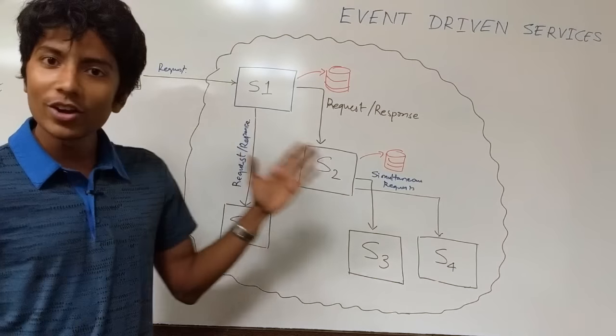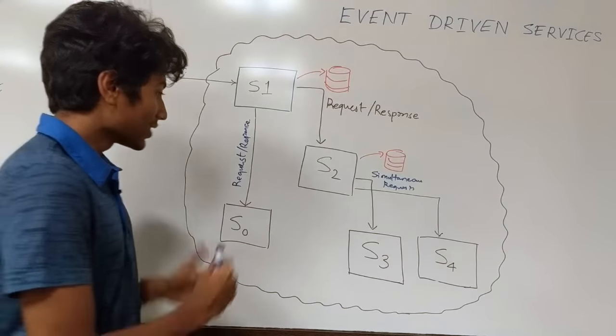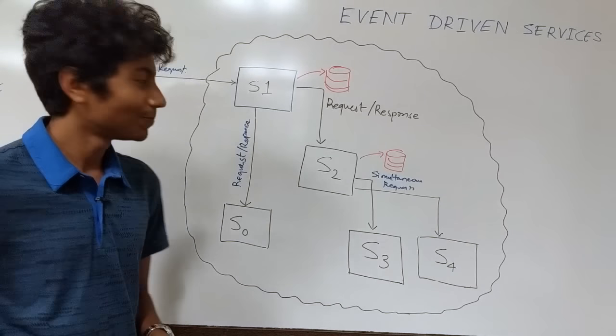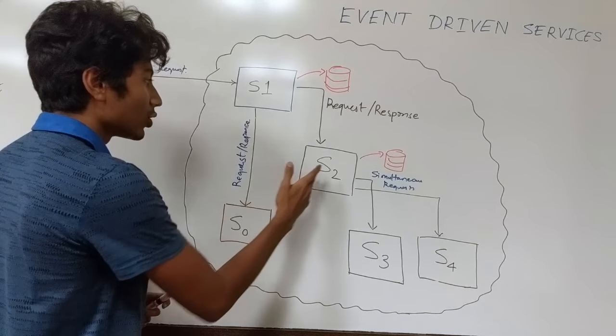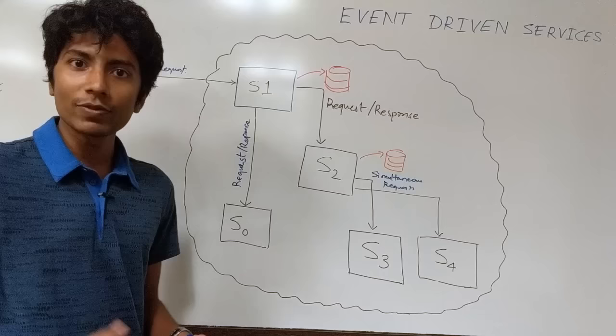Hi everyone, we are talking about event-driven services now and as you can see we have a microservice architecture. So S1, S0, S2, S3 and S4 are the services we have.